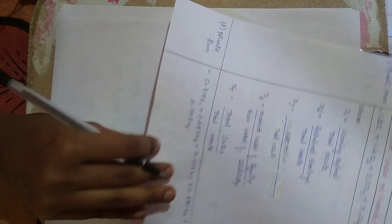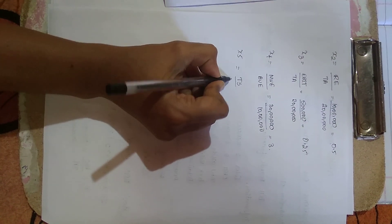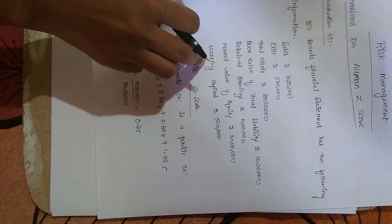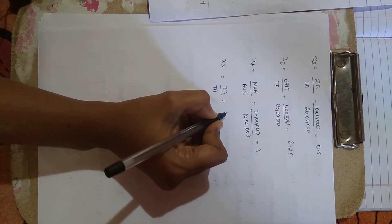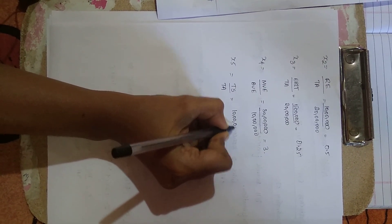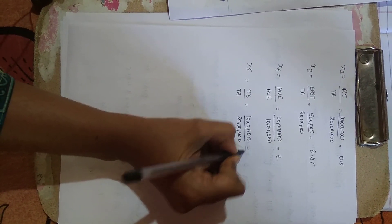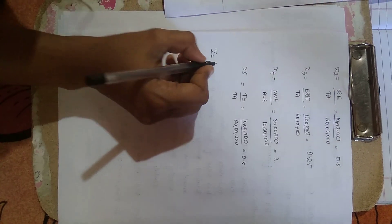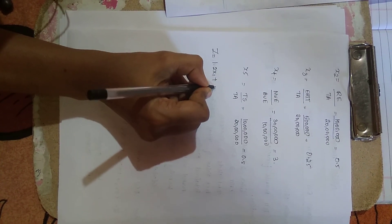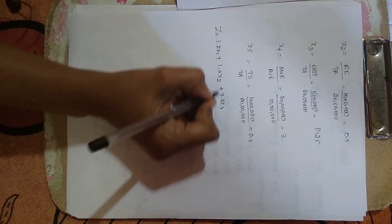For X5, the formula is total sales divided by total assets. Total sales is 10 lakhs and total assets is 20 lakhs. So 10 lakhs divided by 20 lakhs — the answer is 0.5.